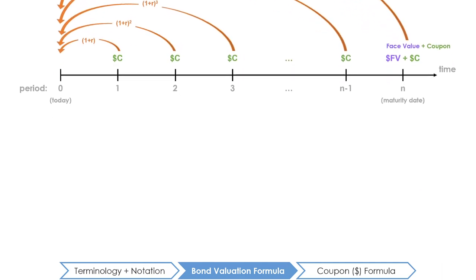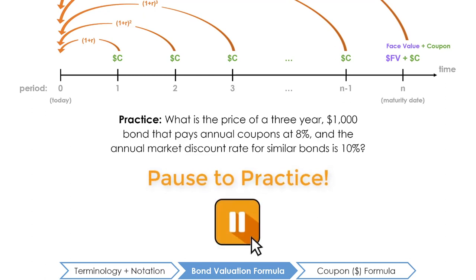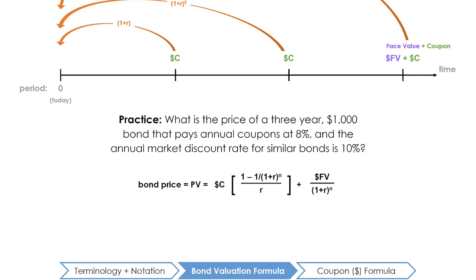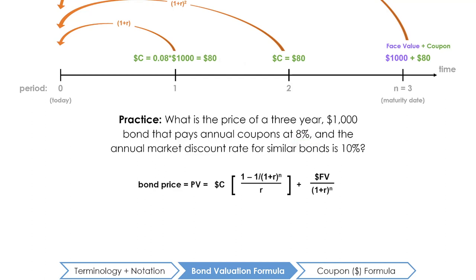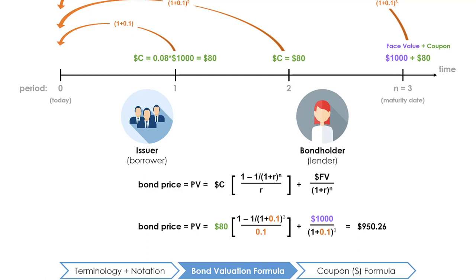Let's look at a quick example. What is the price of a three-year $1,000 bond that pays annual coupons at 8%, and the annual market discount rate for similar bonds is 10%? Dissecting the numbers: the issuer must pay the bond holder $1,000 three years from now. Until then, there will be three annual coupon payments, with the first coupon in one period from today and the last coupon on the maturity date. An 8% annual coupon on a $1,000 bond means the issuer must pay the bond holder $80 each year. Bringing all cash flows to a present value at a discount rate of 10%, the price of this bond is approximately $950.26.